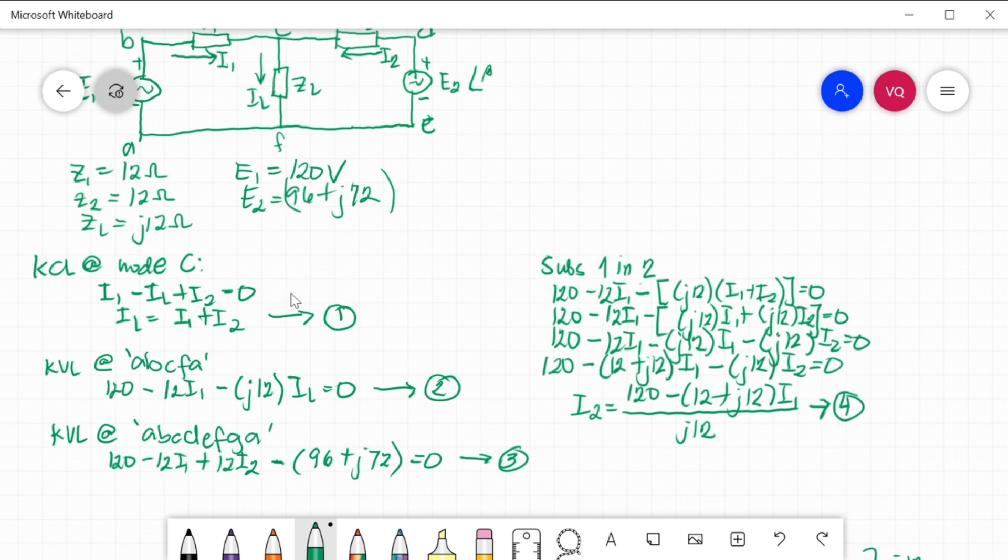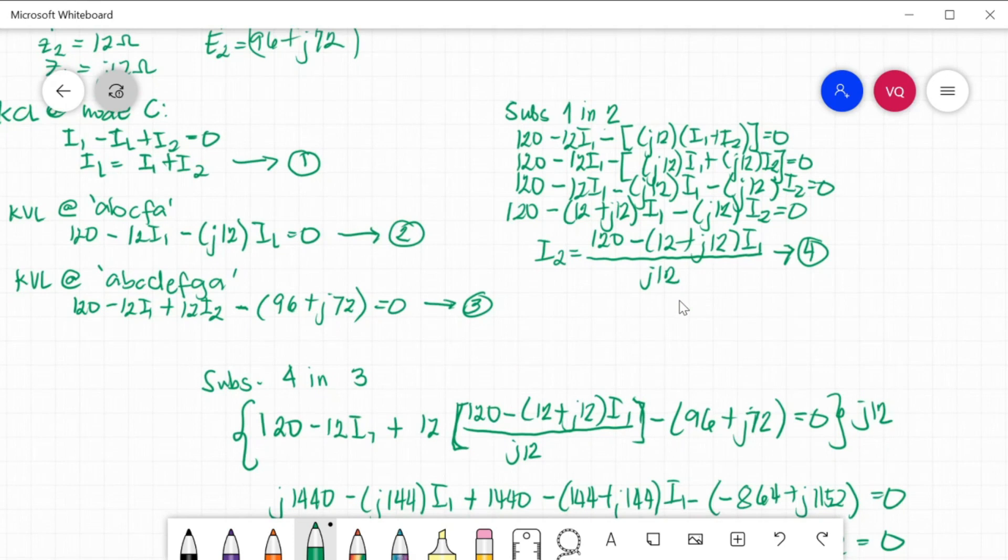Substitute 1 in 2. Substitute this equation 1 in equation 2. You will have 120 minus 12 I1 minus parenthesis of J12 times I1 plus I2 is equal to 0. I-distribute mo yung J12 sa I1 and I2. You will get 120 minus 12 I1 minus J12 I1 minus J12 I2 is equal to 0. Combining like terms, combine mo yung I1 and I1. You will have 120 minus 12 plus J12 I1 minus J12 I2 is equal to 0. Getting your I2 will be 120 minus the parenthesis of 12 plus J12 I1 divided by J12. That will be your equation 4.